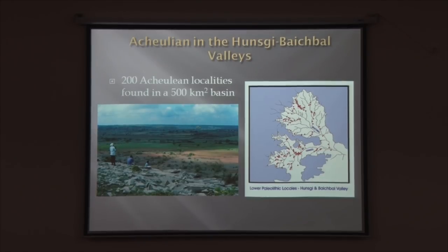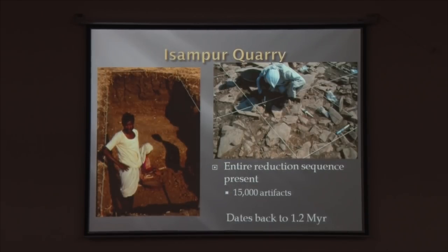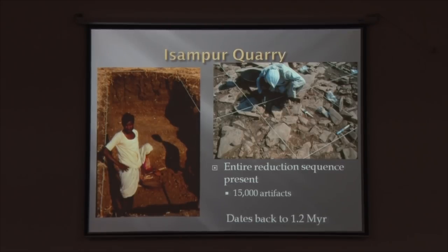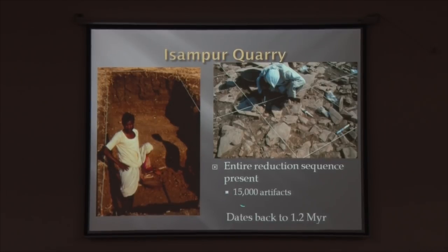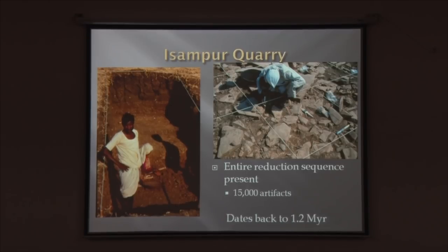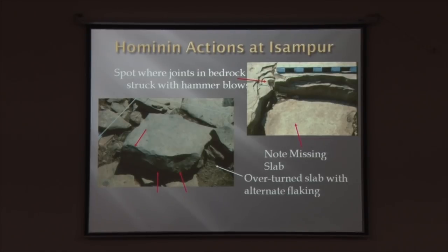The sites are associated with limestone outcrops. Limestone was a poor raw material for making stone tools, yet they used it because habitability of the area was the greater consideration. The ESR date of 1.2 million years was obtained for the site called Isampur Quarry — the oldest known Paleolithic stone quarry anywhere in the world, including Africa. This site has yielded nearly 15,000 artifacts in a small trench of about 15 by 20 meters, with the complete processing sequence documented from the excavated surface.